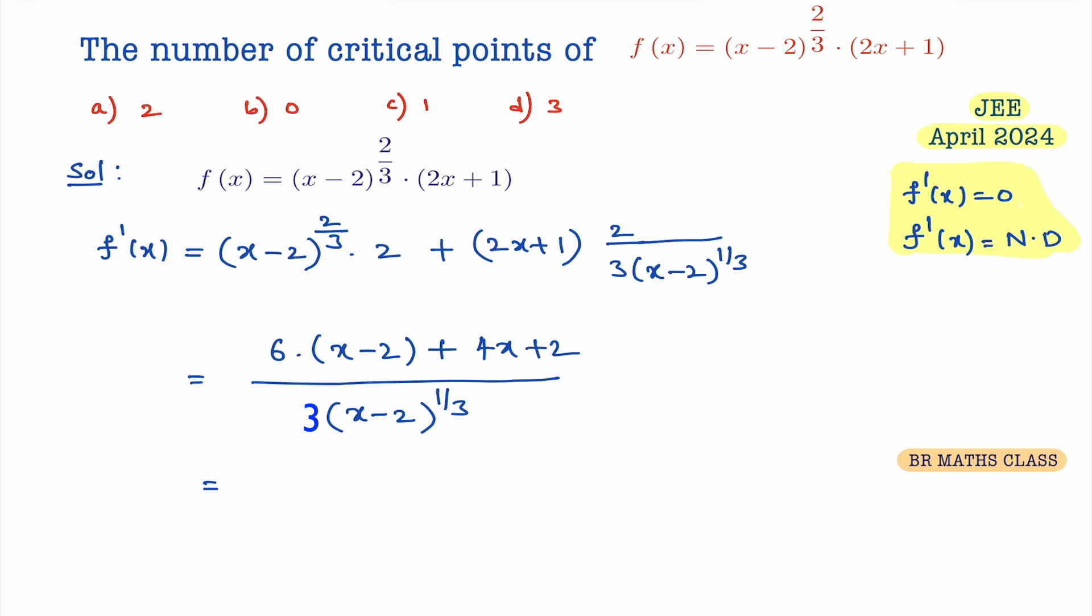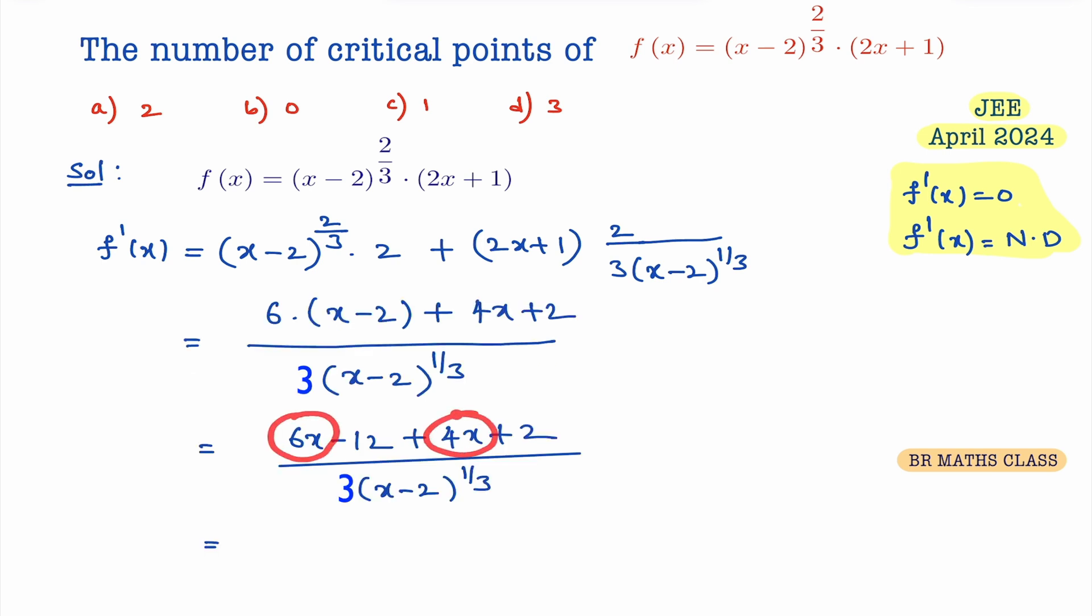Further, if we simplify this, you see here 6x plus 4x is 10x, minus 12 plus 2 is minus 10. So this is 10x minus 10. You can take 10 common. What you will get? 10 into x minus 1 divided by x minus 2 whole power 1 by 3.